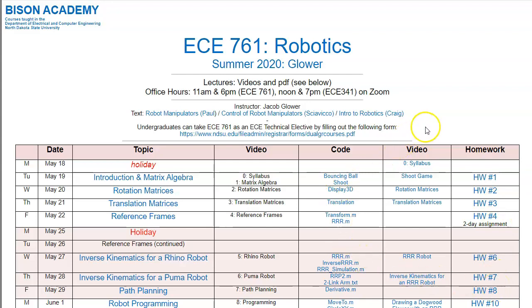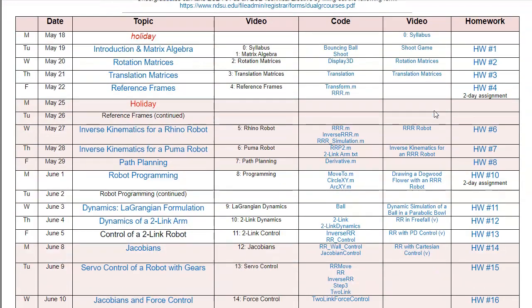The objective of the course is to give you the mathematics behind robotic manipulators. We'll be starting out talking about some matrix algebra, and then going into rotation and translation matrices. Essentially with a robot, you want to go from, say, shoulder joint to elbow joint to wrist joint.